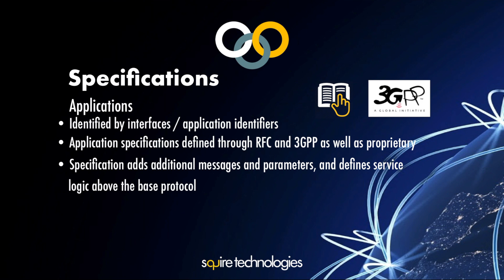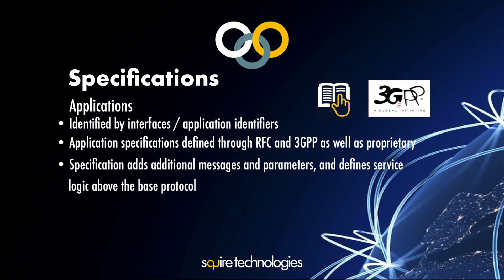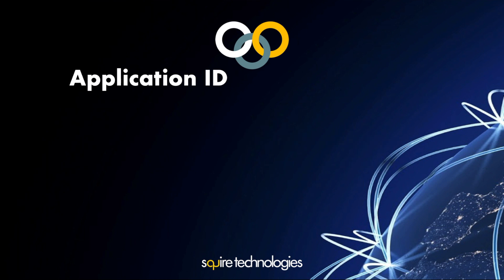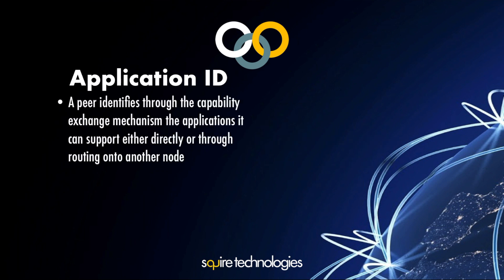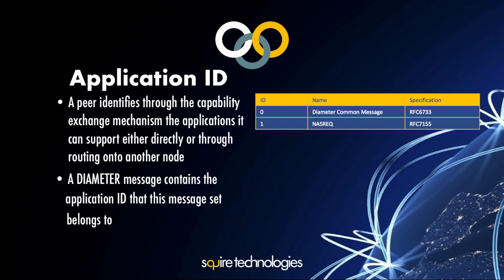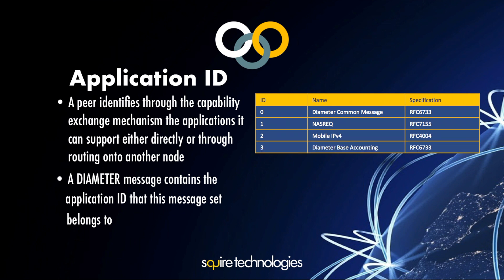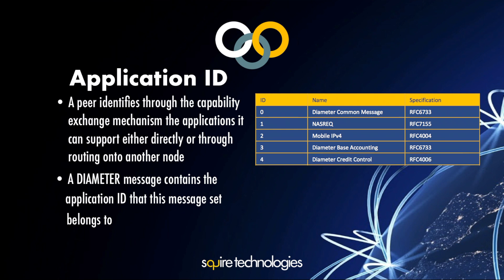The specification covers traditional messages, parameters, and defines the service logic above the base protocol. We've got the identifier as zero for common messages — that's the base protocol, RFC 6733. There are examples of other applications which the RFCs have come up with, each with a different application ID and specification.